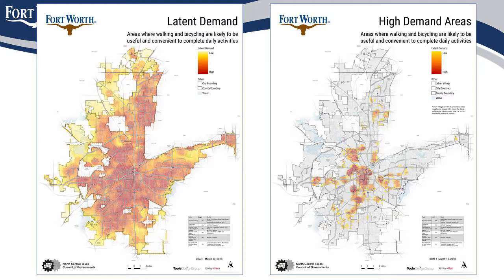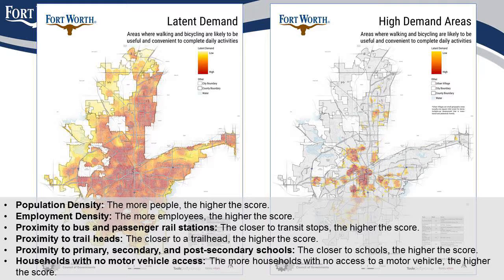Using all those maps and data, we were able to come up with where the top demand is for biking and walking in the city. On the left you can see the full range from low to high demand — it's highest in the center and tapers out as the population gets more diffused. On the right, we looked at just the hottest of the hottest, the highest demand pockets in those neighborhoods. The factors used to determine this demand analysis include population, employment, transit stations, bike trailheads, schools, and zero-car households.